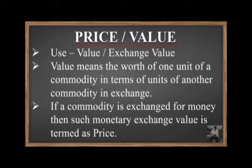In value, it is similar to the barter system — one unit of a commodity is exchanged with another commodity. This is the meaning of value; it is different from price. When a commodity is exchanged for money, such monetary exchange value is termed as the price. When we buy a particular cloth by giving money, the medium of exchange is money, and that is called price. This is the difference between value and price.